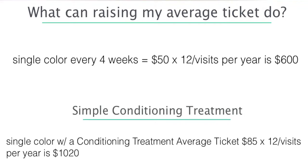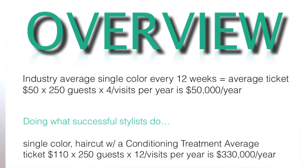With a simple upgrade — now that guest has a single color and their average ticket is $85 — at 12 visits a year they are now a $1,020 guest. You went from a $600 guest to $1,020, and that's just one guest in the salon. Think about if you take your whole book and make these little tiny upgrades — the things you never want to do because you're so busy — one guest at a time, you're going to see a big difference in your paycheck.